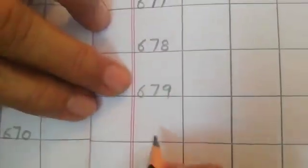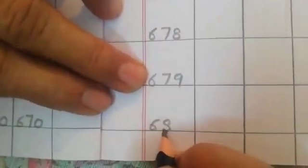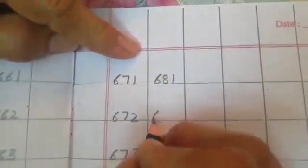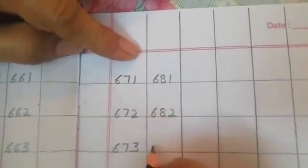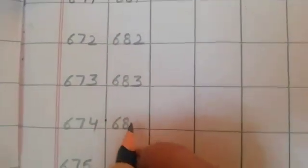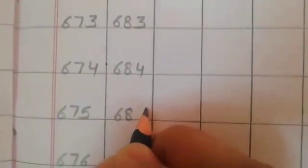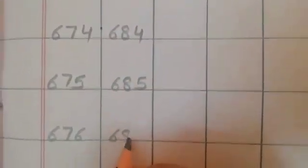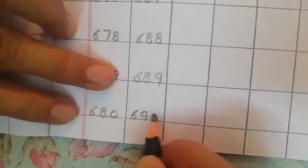Then what comes after 679? 680, 681, 682, 683, 684, 685, 686, 687, 688, 689. What comes after 689? 690.